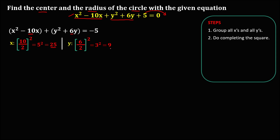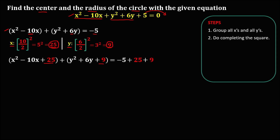We need to add these two numbers to the equation. So we have x squared minus 10x plus 25 for x, and y squared plus 6y plus 9 for y, then equals negative 5. The numbers added on the left side must also be added on the right side — so plus 25 and plus 9.